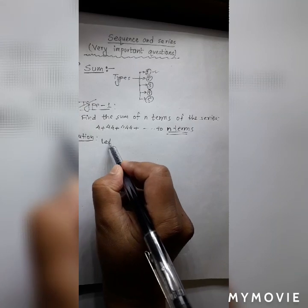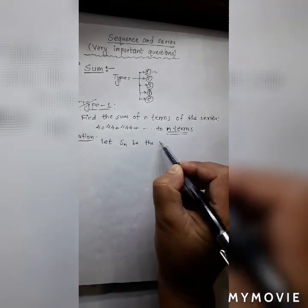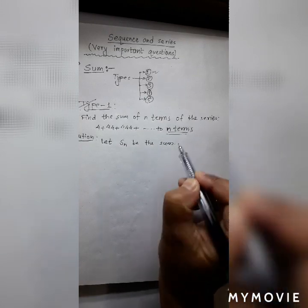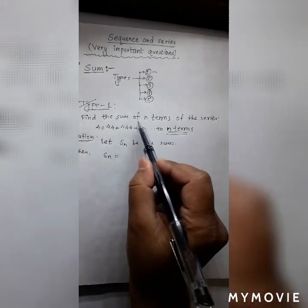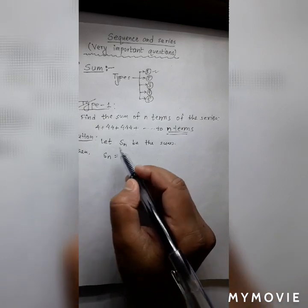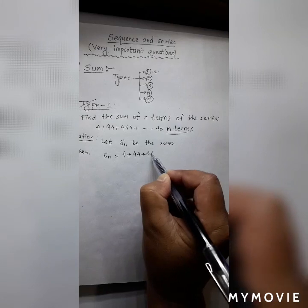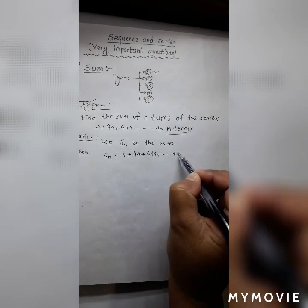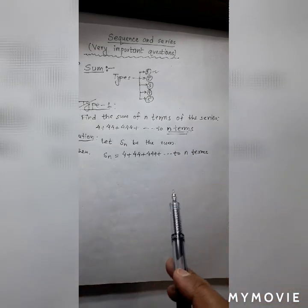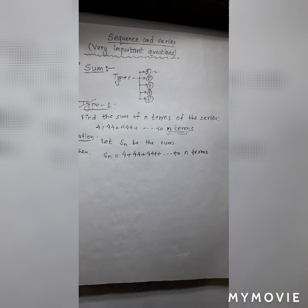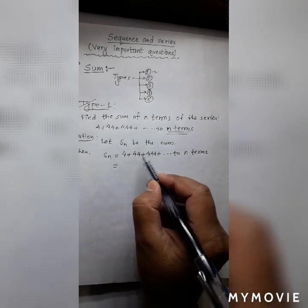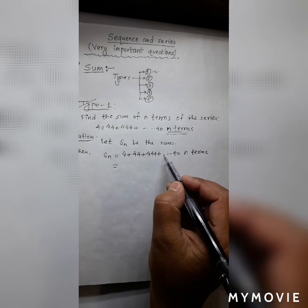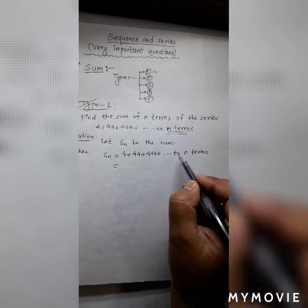To solve this, let S_n be the sum. Then this can be written as S_n equals 4 plus 44 plus 444 plus 4444 and so on, up to n terms. So here is 4, here is 44, here is 444, here is 4444 and so on, up to n terms.